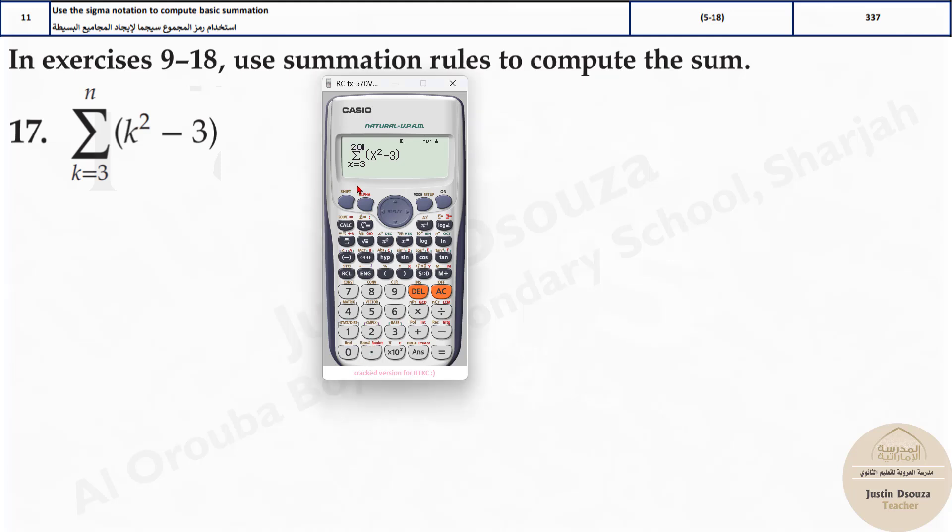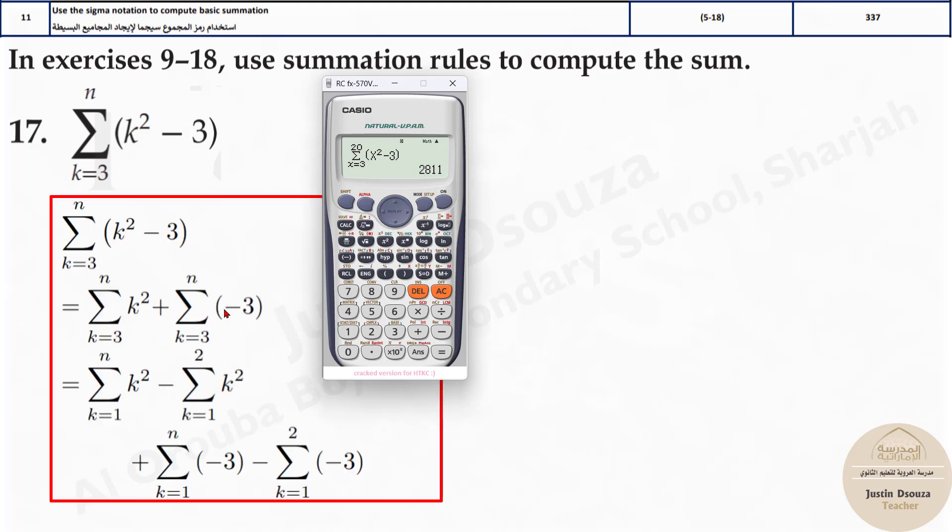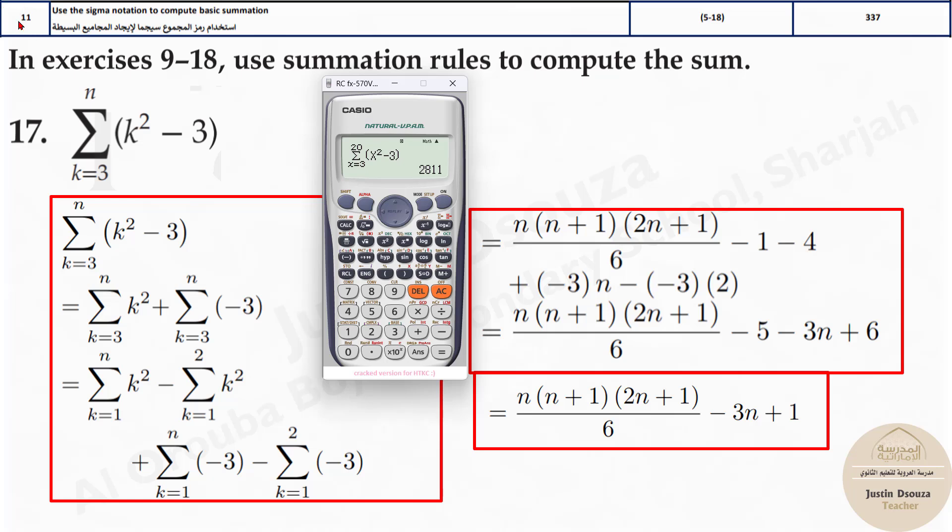You can take 10. Doesn't matter. Okay? And the answer over here is 2811. Now, look into all the four options. This is question number 11. You'll have four options. And this is the final answer. You will have four different answers having the variable n. Now, remember this answer, 2811.